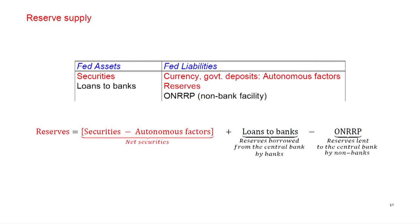Moving on to supply. The reserve supply can be thought of in terms of the Fed's balance sheet. The Fed buys some securities and pays for them — some via the autonomous factors and the rest with reserves. So the starting point for how large reserves will be is net securities, meaning securities minus autonomous factors. If the central bank has a lending facility, that's another way to supply reserves. And if the central bank has an investment facility for non-banks — the ONRP facility — that reduces the amount of reserve funding needed and will be subtracted.